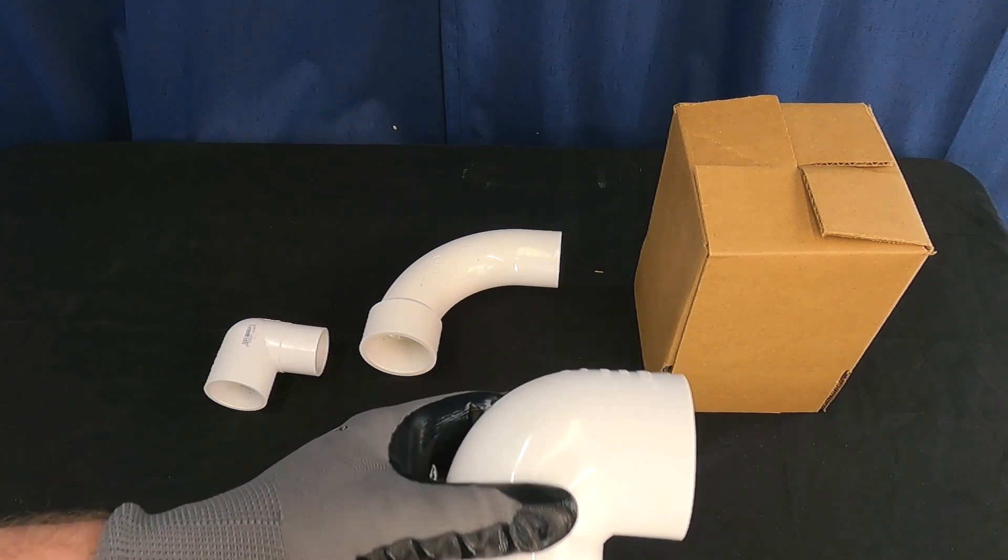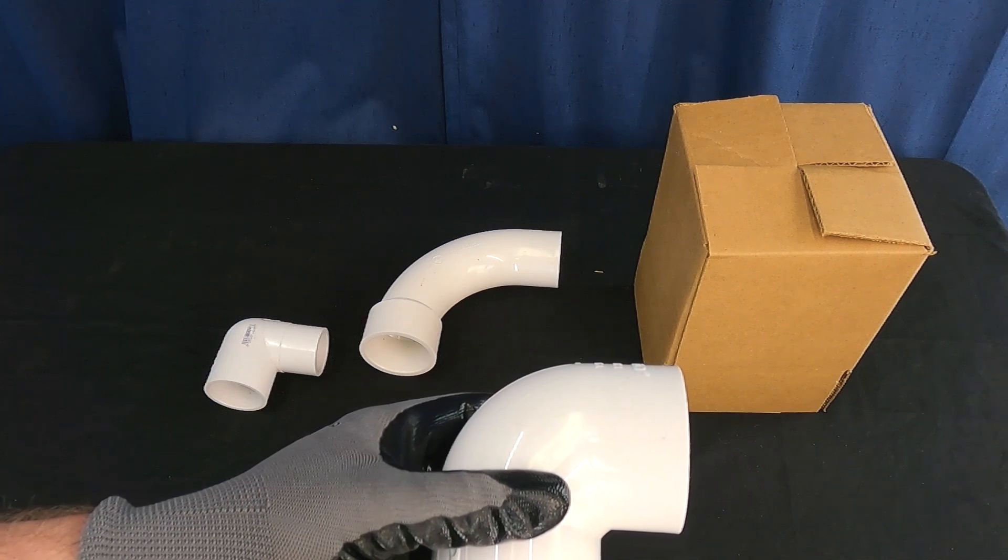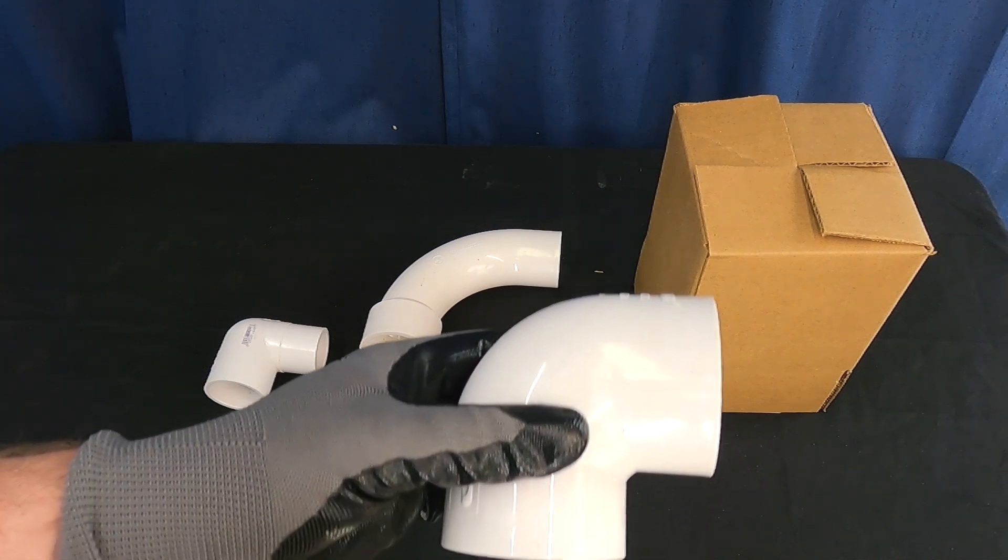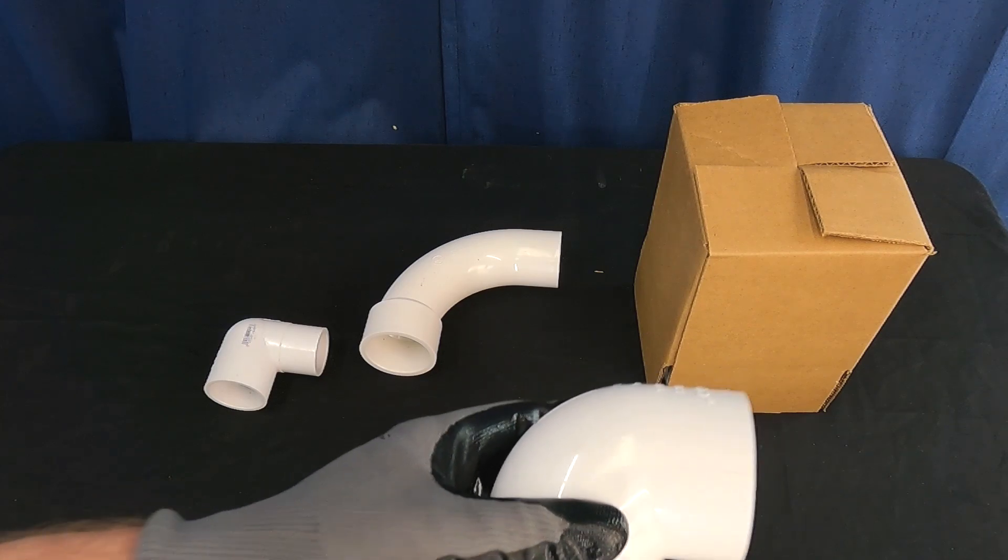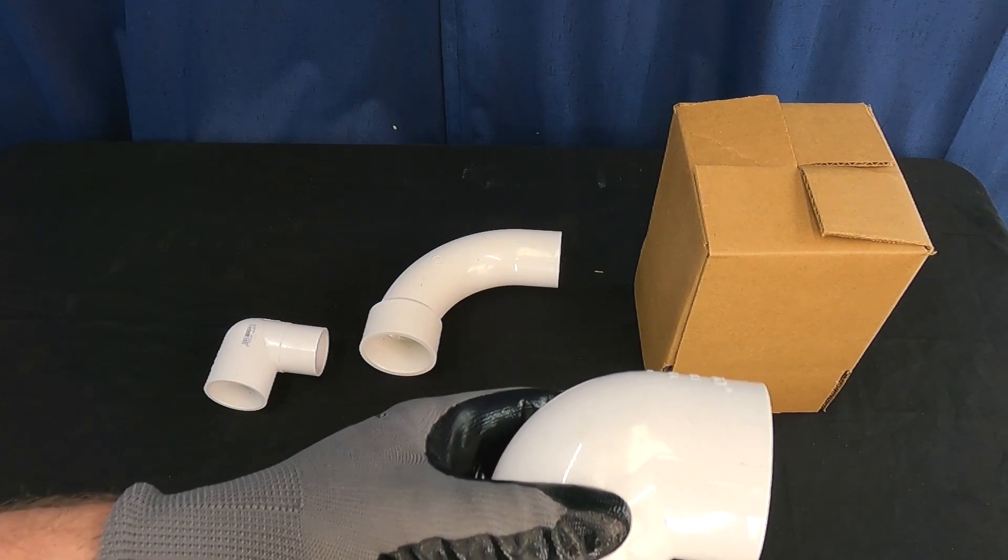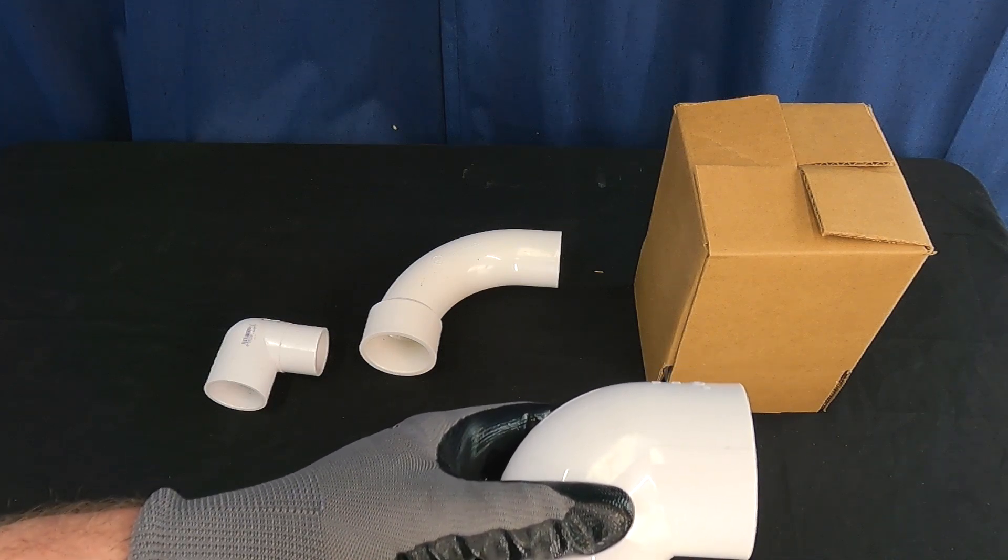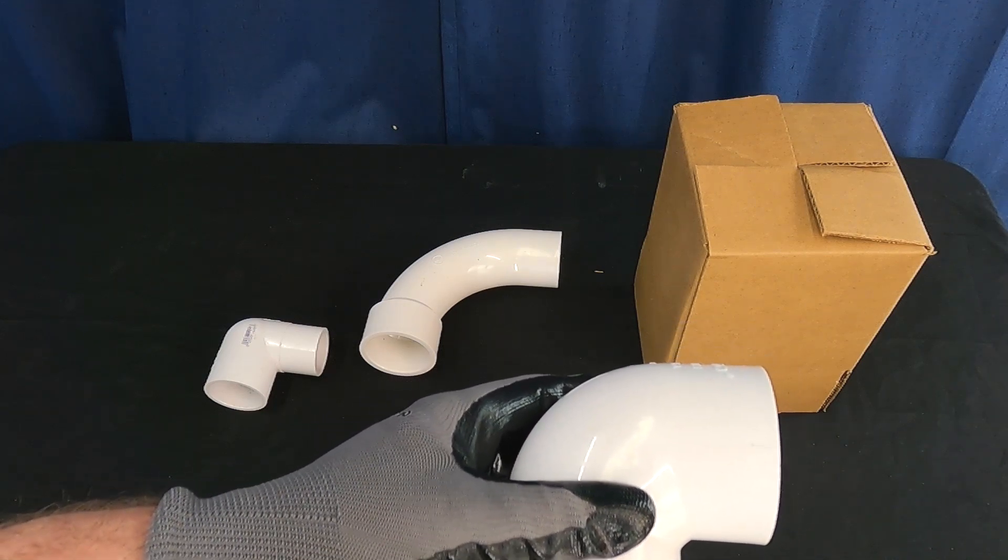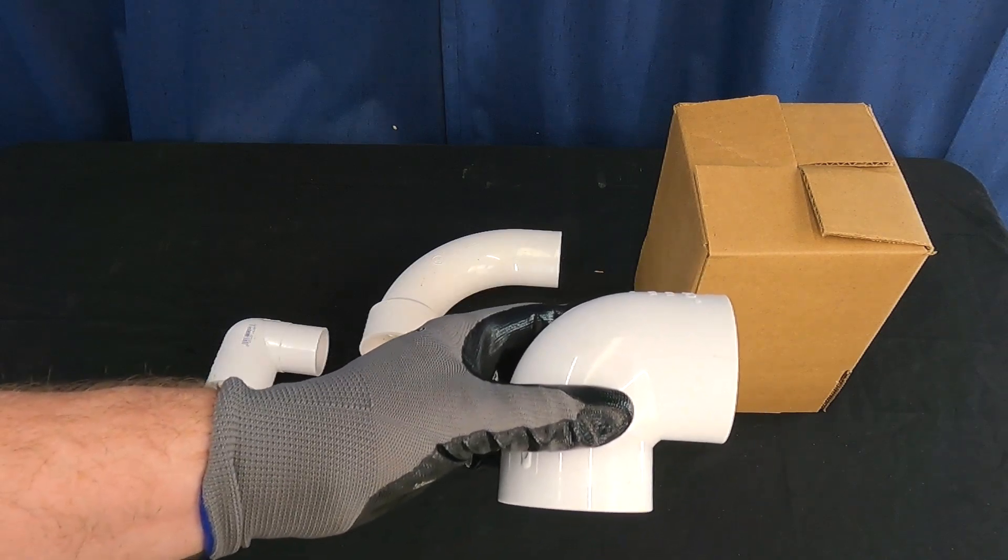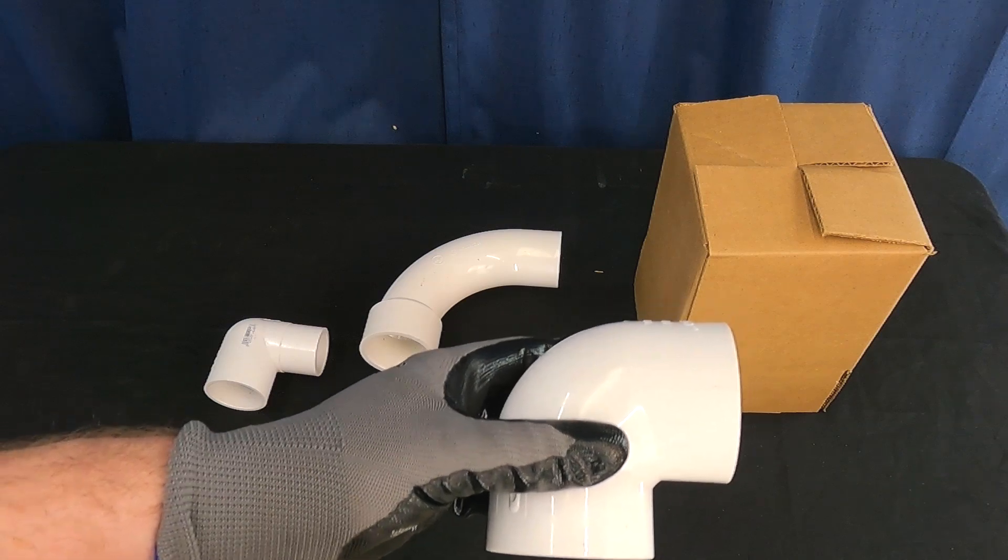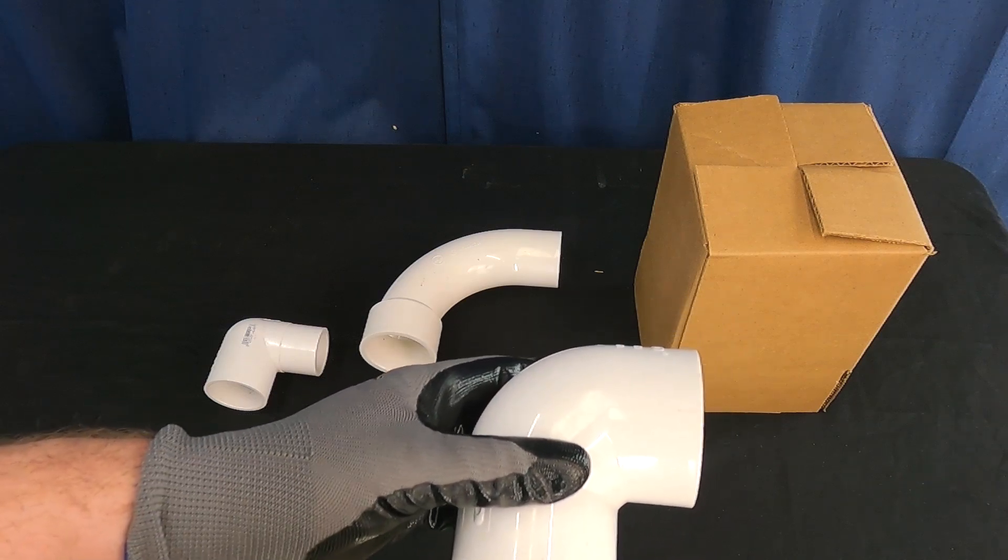And people often get hung up a little bit hunting for the sweep elbows because there's a lot of content out there, again much of it by myself, talking about how sweeps are better than a short radius elbow. And it is true. There's less friction loss with a sweep fitting versus a short radius 90. Still this is a perfectly acceptable fitting to use by the dozen when you're installing a swimming pool. No problem at all.